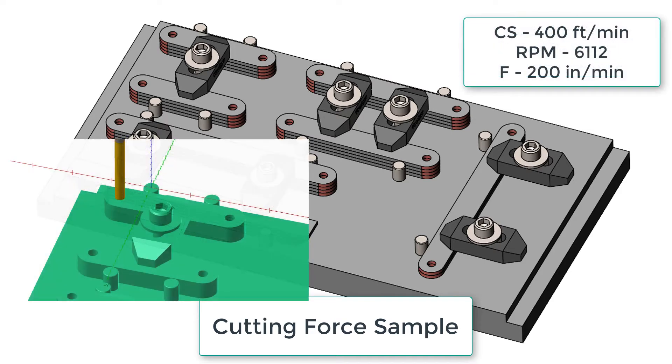First let's calculate if we use a quarter-inch stub drill to drill through these parts using a cutting speed of 400 feet per minute, an RPM of 6112 and a feed rate of 200 inches per minute.